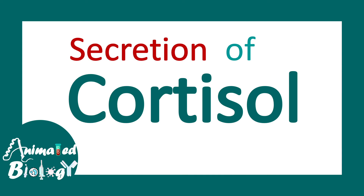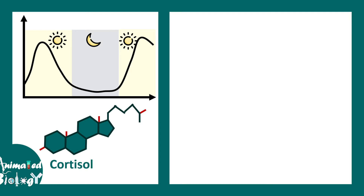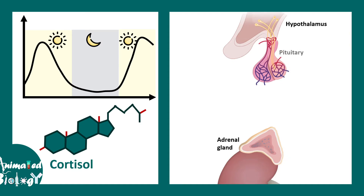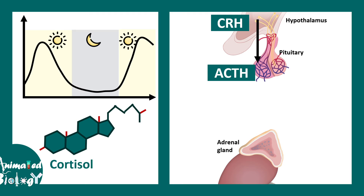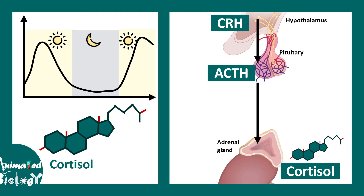The secretion of cortisol follows a diurnal pattern, meaning it has higher secretion during the day and lower secretion during the night. Cortisol secretion is regulated by a hormonal axis: the corticotropin-releasing hormone (CRH) from the hypothalamus instructs the pituitary to secrete ACTH, which then acts on the adrenal gland to secrete cortisol. When cortisol levels are abnormally high in the blood, there is negative feedback — short-term on the pituitary and longer-term on the hypothalamus — to reduce the levels of CRH and ACTH. This is how a balanced secretion loop is maintained.